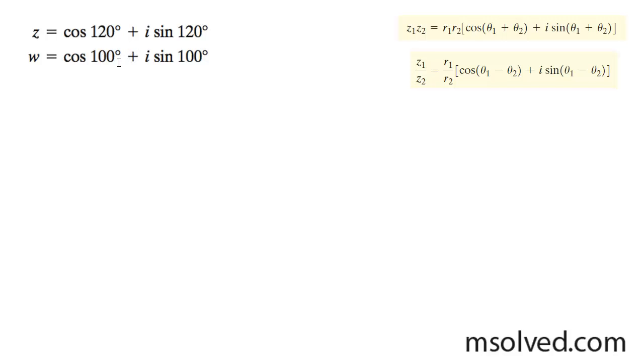We're going to find the multiplication and the division of these two equations. To find the multiplication first, we do z times w.